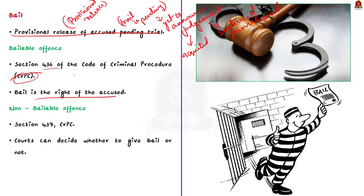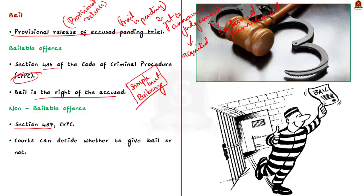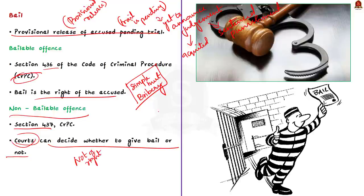Common bailable offenses under the Indian Penal Code include simple hurt, bribery, and public nuisance. Section 437 deals with bail in non-bailable offenses, where granting bail is at the discretion of the court — it is not a right. So the common statement that 'bail is a right of the individual' is incorrect; bail is a right only if the offense is bailable. There are three types of bail: regular bail, interim bail, and anticipatory bail.